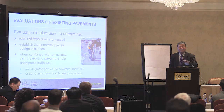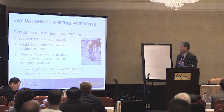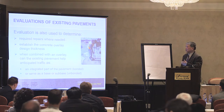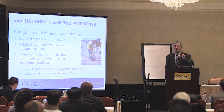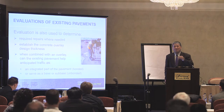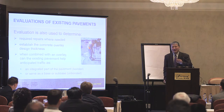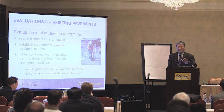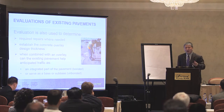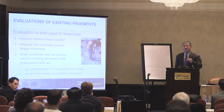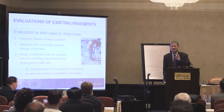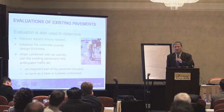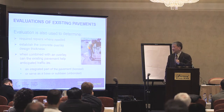Once you understand the problems, you can decide whether unbonded or bonded concrete overlay is the best application and determine the required thickness. For bonded overlay, you need to ensure bonding is critical. Look at rutting: how much milling is required to remove the rutted asphalt and provide uniform support. In general, if you have 50 mm of rutting or less, you don't need to do anything; more than 50 mm requires milling to provide uniform support.